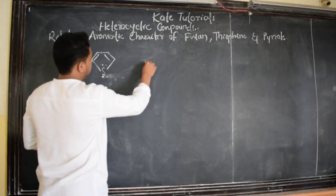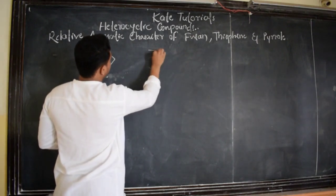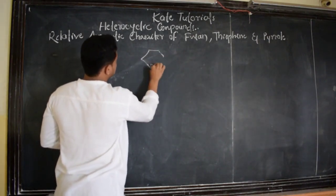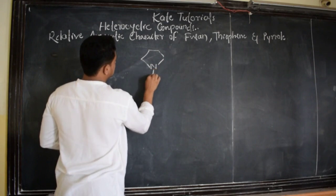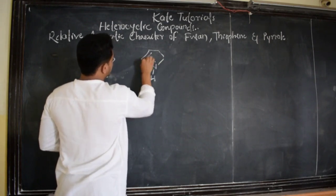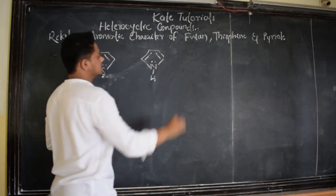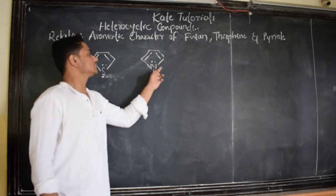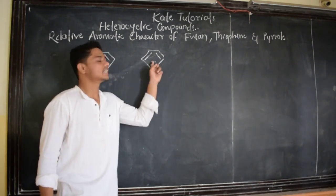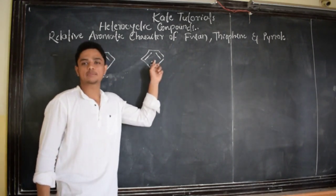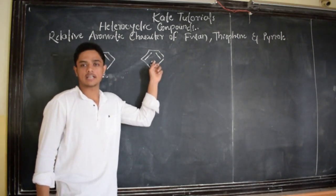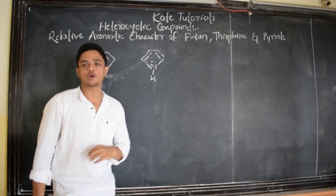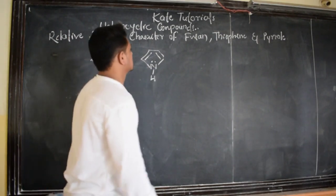Next, let me discuss about pyrrole. The structure of pyrrole is like this. Here, nitrogen is also sp2-hybridized. All three bonds are sp2-hybridized. This is the unhybridized p-orbital. The electrons present in the unhybridized p-orbital are the ones which are involved in resonance.